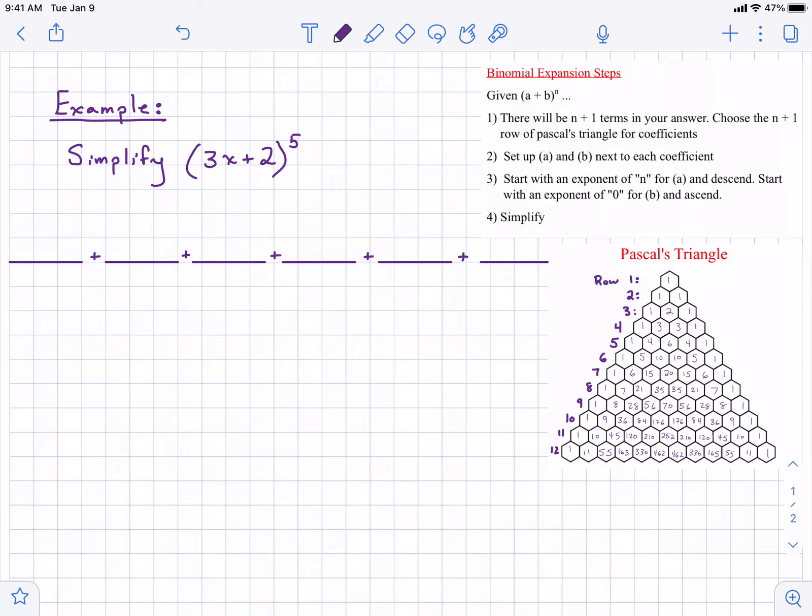I have some simplified steps there on the right. The first thing to be aware of, or the first step, is how many terms are in your final answer. It's basically going to be one more than the exponent you're given. In our example, our exponent is to the fifth power, meaning we're going to have six terms in our final answer.